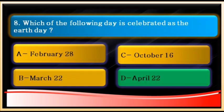Question number eight: which of the following days is celebrated as Earth Day? April 22 is celebrated as Earth Day. Option A, February 28, is Science Day. March 22 is World Water Day. October 16 is World Food Day, because the FAO was founded on that day.